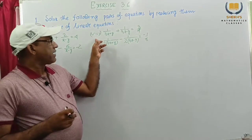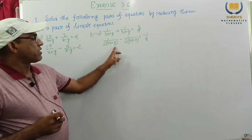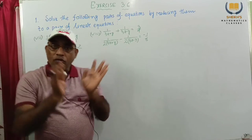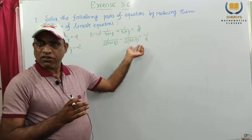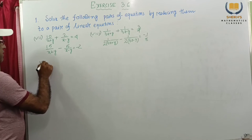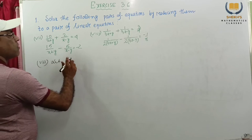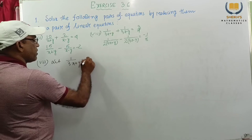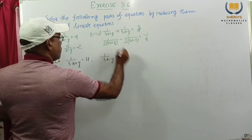We consider problem number 8. In 8: 1 by 3x plus y, 1 by 3x minus y. Let 1 by 3x plus y equal to u, 1 by 3x minus y equal to v. Therefore this equation we get: u plus v equal to 3 by 4 — this is number 1. And: 1 by 2 u minus 1 by 2 v equal to minus 1 by 8.